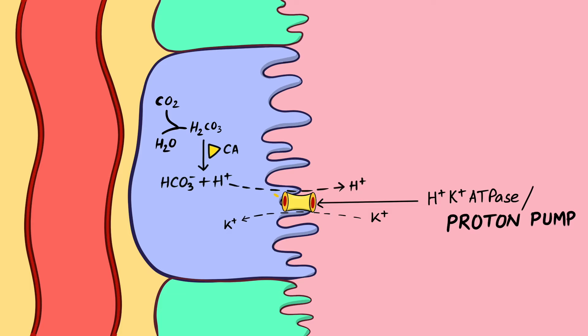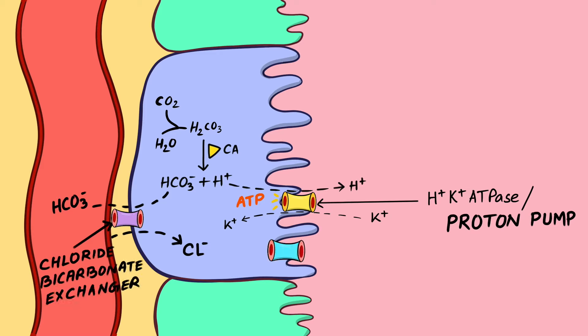This proton pump pumps hydrogen ion into the lumen against the concentration gradient. This pump uses ATP as an energy source as it pumps hydrogen ions against the concentration gradient. Now the remaining bicarbonate is pumped out of the parietal cells in exchange of chloride ions using a chloride bicarbonate exchanger. Now chloride ions in parietal cells are pumped out from the apical side into the lumen through a chloride channel.